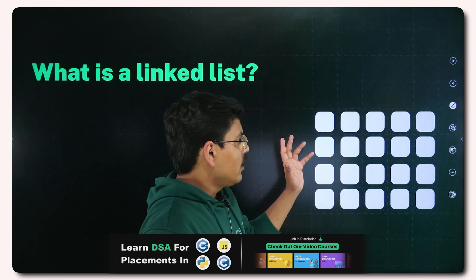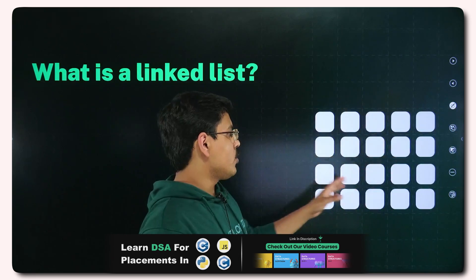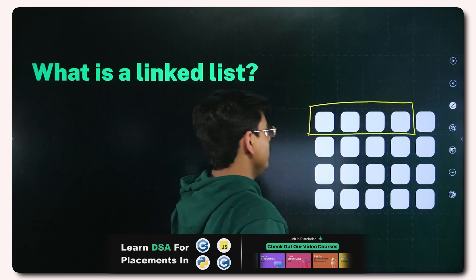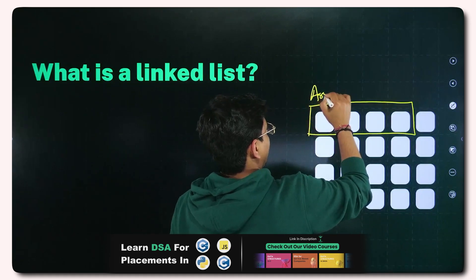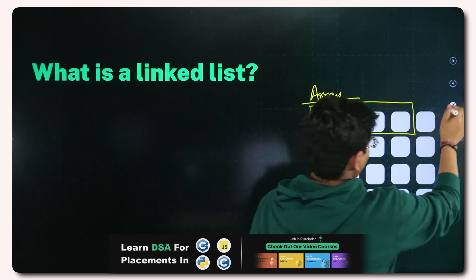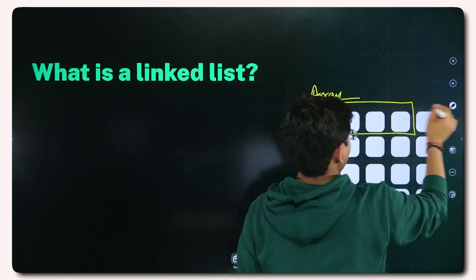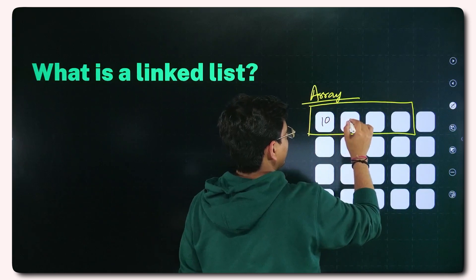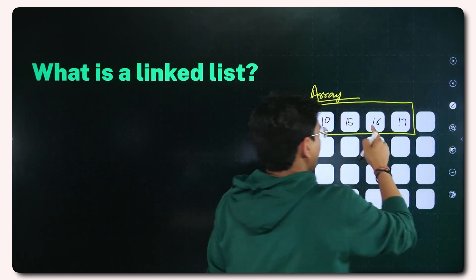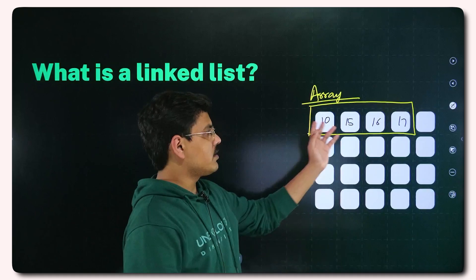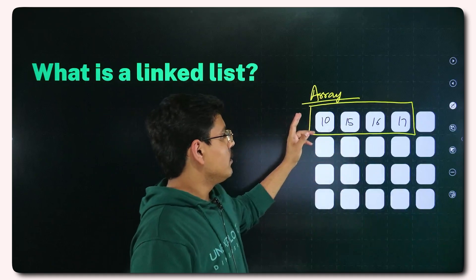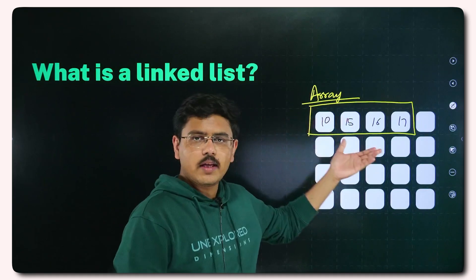Before I explain what exactly a linked list is, let me tell you how an array looks in memory. Consider that this is your memory space — if I take these four contiguous memory locations, I can name them as an array and put some values here: 10, 15, 16, 17. So this is an array, and this is a contiguous scheme of memory allocation — you have contiguous memory locations for storing any data.